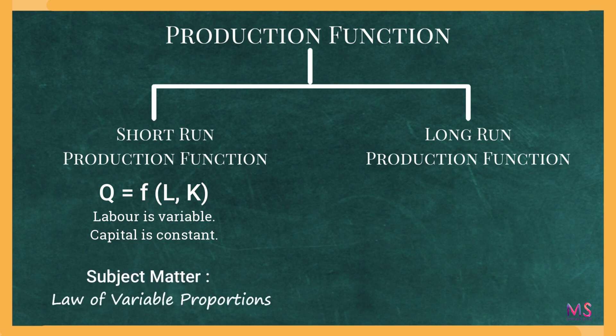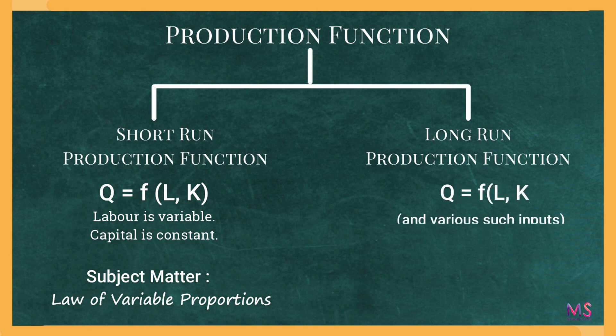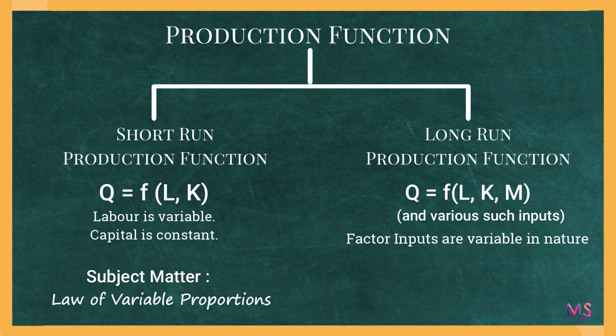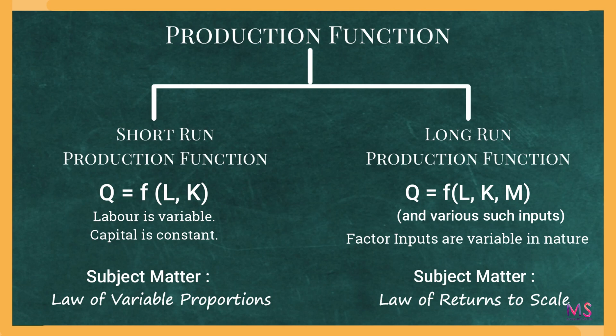The second kind is the long run production function, which shows output as a function of variable inputs. Here, output is a function of labor (L), capital (K), and raw materials (M), and all these inputs are variable in nature because in the long run all factors are variable. The study of the long run production function is the subject matter of the Law of Returns to Scale, which we will be studying now.